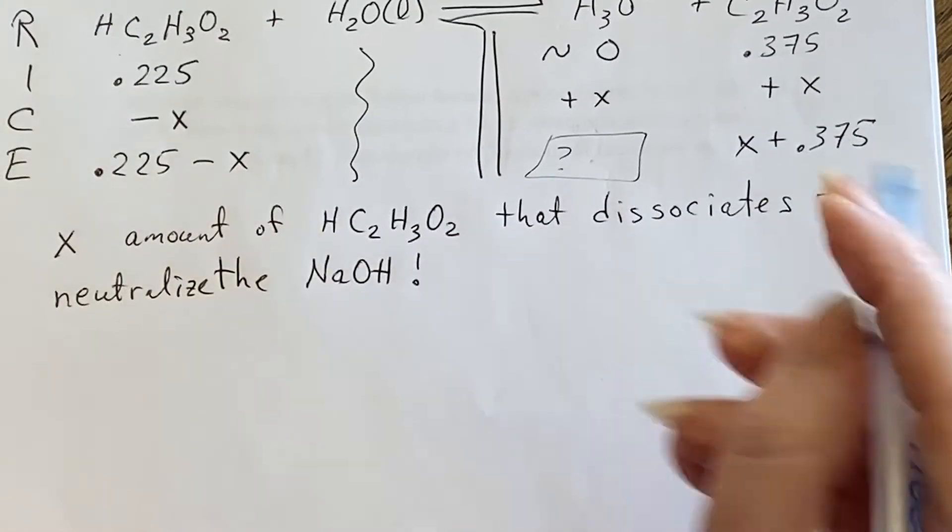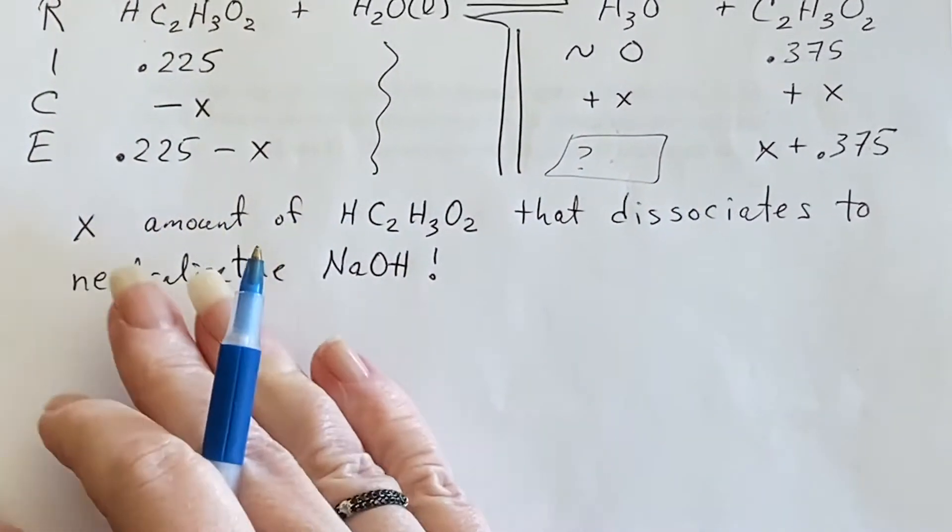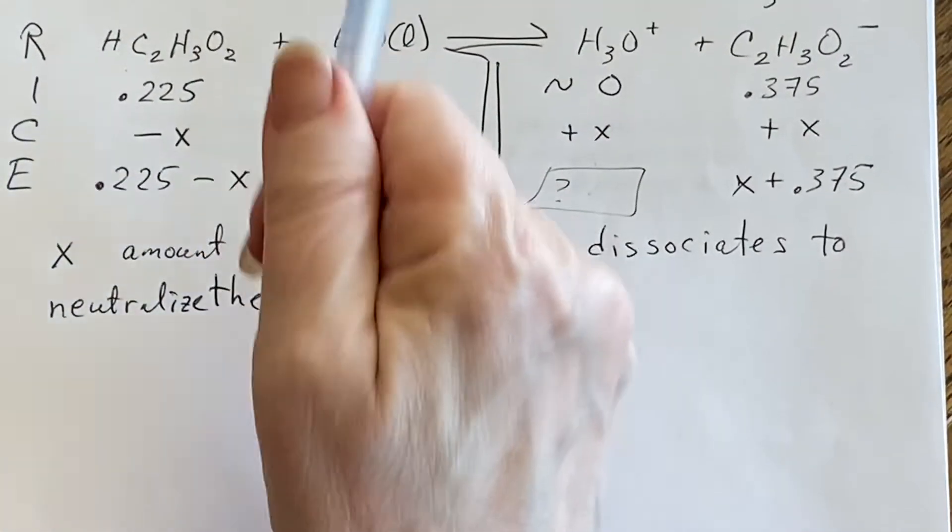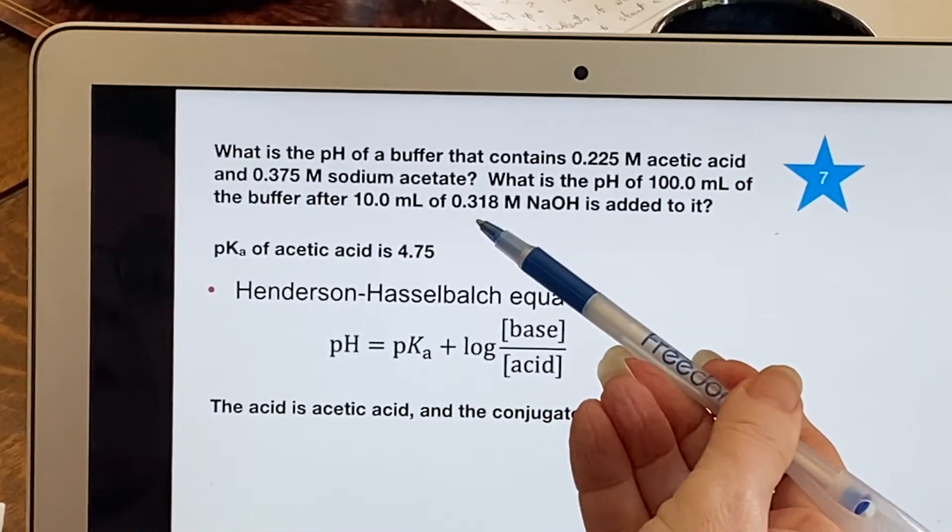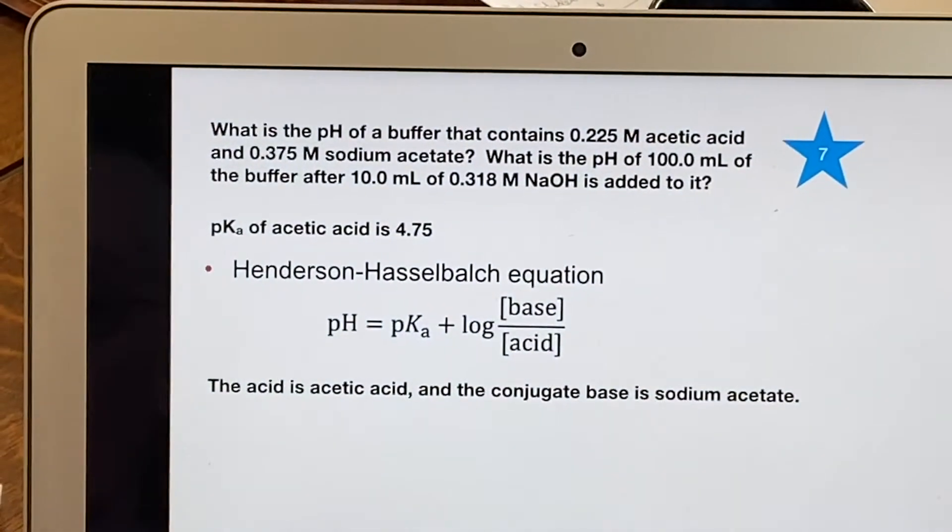Well then that means I know exactly how much of it needs to fall apart because I know how much NaOH I had. I had 10 milliliters of the 0.318 molar.